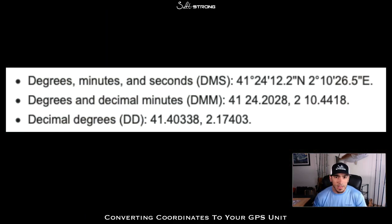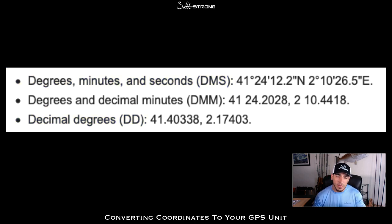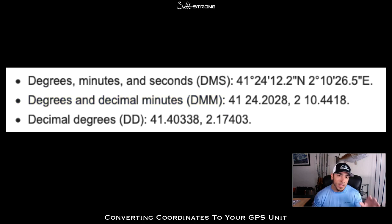First, to give you an idea of the different formats that GPS coordinates come in: you have degrees, minutes, and seconds; then you have degrees and decimal minutes; and then you have decimal degrees. When pulling coordinates from Google Maps or Google Earth, they're either going to be in degrees, minutes, and seconds or decimal degrees. But typically what you input into your GPS unit is degrees and decimal minutes, so you have to convert those numbers to get to the exact spot you're looking for.